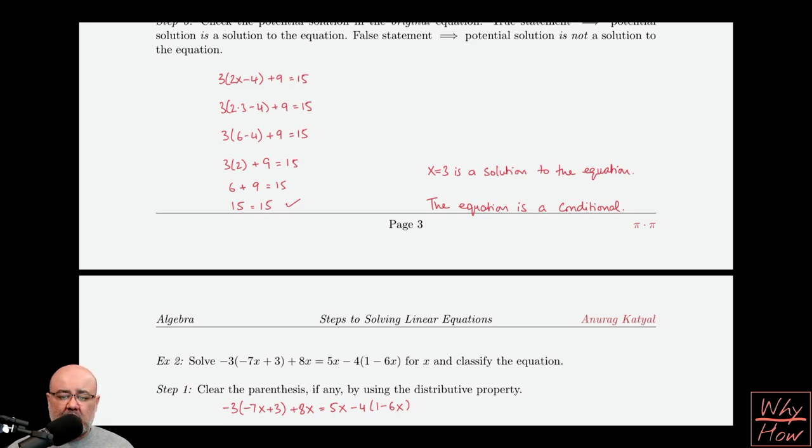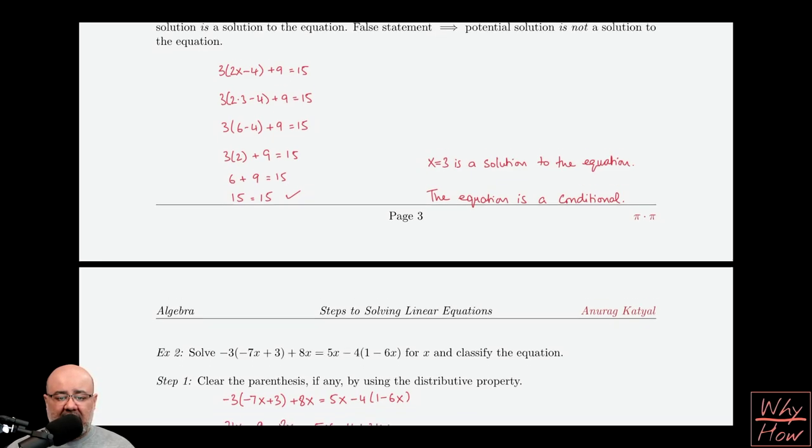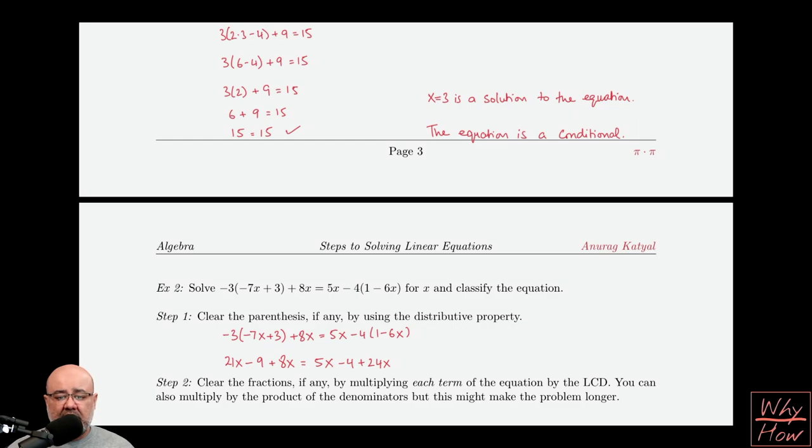We're solving for x and trying to classify the equation at the end. Step one is to clear the parentheses, and there's two sets, one on the left and one on the right. First we need to distribute the negative 3 into both of these terms, and we also need to distribute the negative 4 into both of those terms.